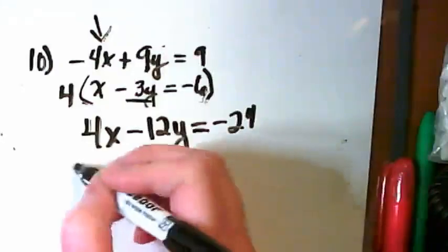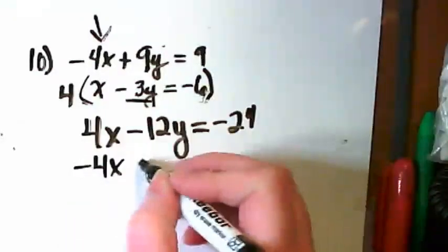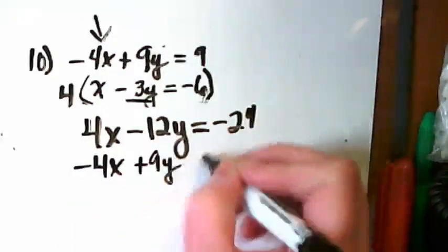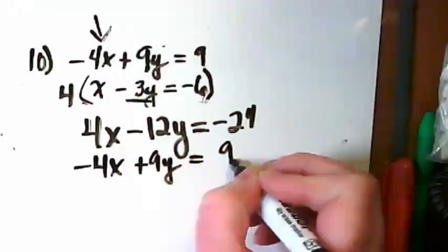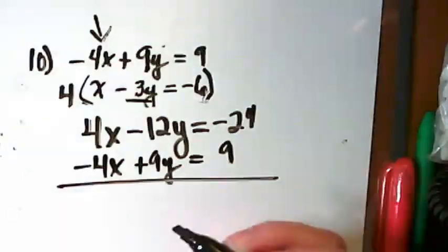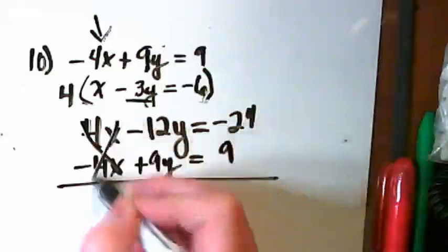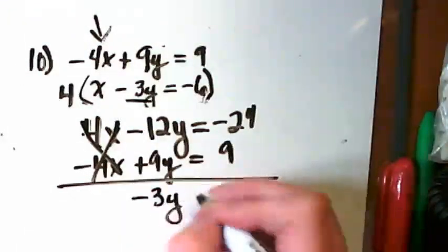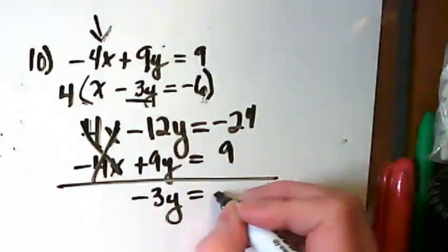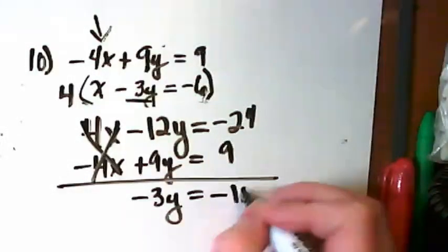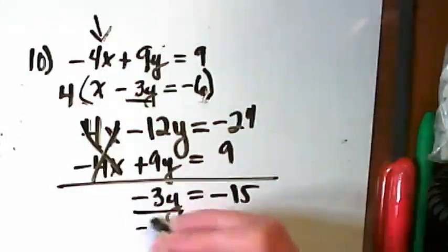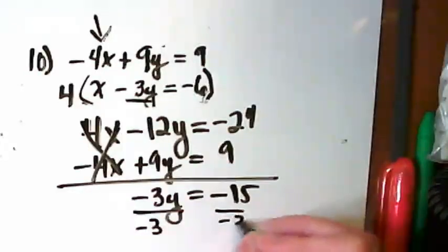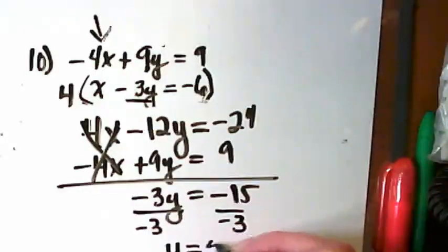And then I'm going to bring the first equation down. This gets eliminated. I get negative 3y is equal to negative 15. Y equals 5.